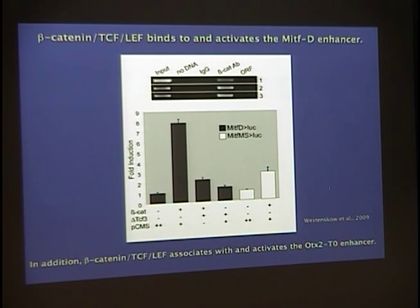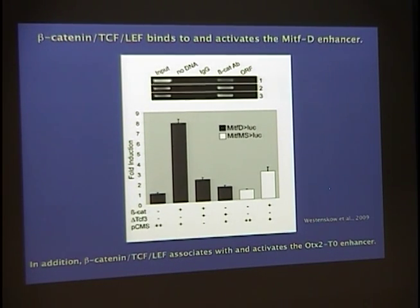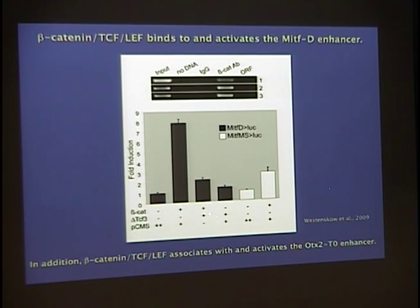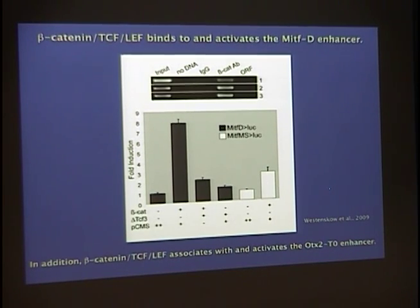To confirm this is an activating interaction, we did a luciferase assay where a piece of the MITF-D promoter is connected to a reporter, and we transfected HEK-293 cells and co-transfected beta-catenin. The reporter is strongly upregulated when beta-catenin is introduced, and this doesn't happen when a repressor of this pathway is added in addition. Peter also mutated the binding sites in this promoter region, and that also doesn't lead to significant upregulation. These assays show a direct molecular interaction between the Wnt signaling pathway and downstream factors important for RPE development.